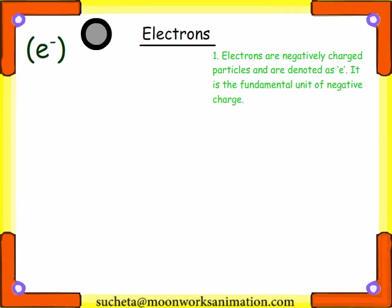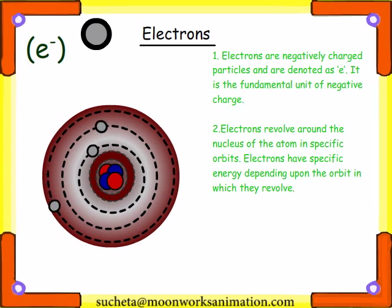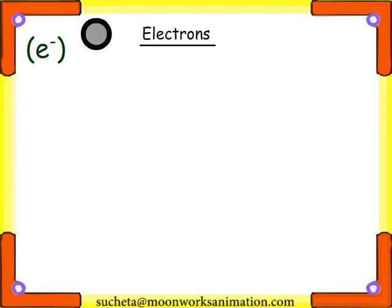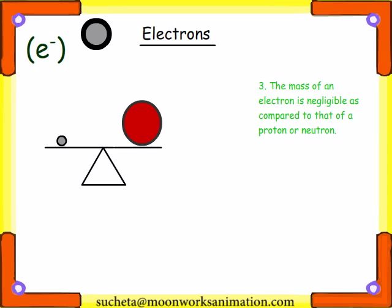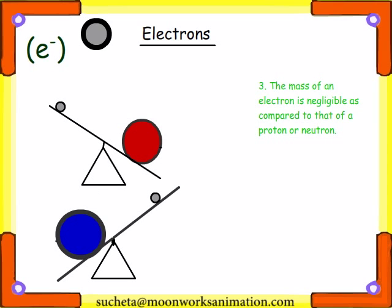Electrons are negatively charged particles and are denoted as E. It is the fundamental unit of negative charge. Electrons revolve around the nucleus of the atom in specific orbits. Electrons have specific energy depending upon the orbit in which they revolve. The mass of an electron is negligible as compared to that of a proton or neutron.